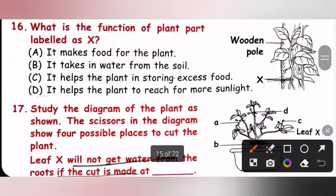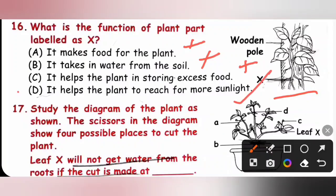Sixteenth, what is the function of a plant part labeled as X? Please check the given picture. The plant shown here is a climber which is climbing up a wooden pole. The structure labeled as X represents special climbing root which helps the plant to climb to a support and grow up to reach for more sunlight. Option A: it makes food for the plant, no. B: it takes in water from the soil, no. C: it helps the plant in storing excess food, no. D: It helps the plant to reach for more sunlight. So option D is the correct answer.